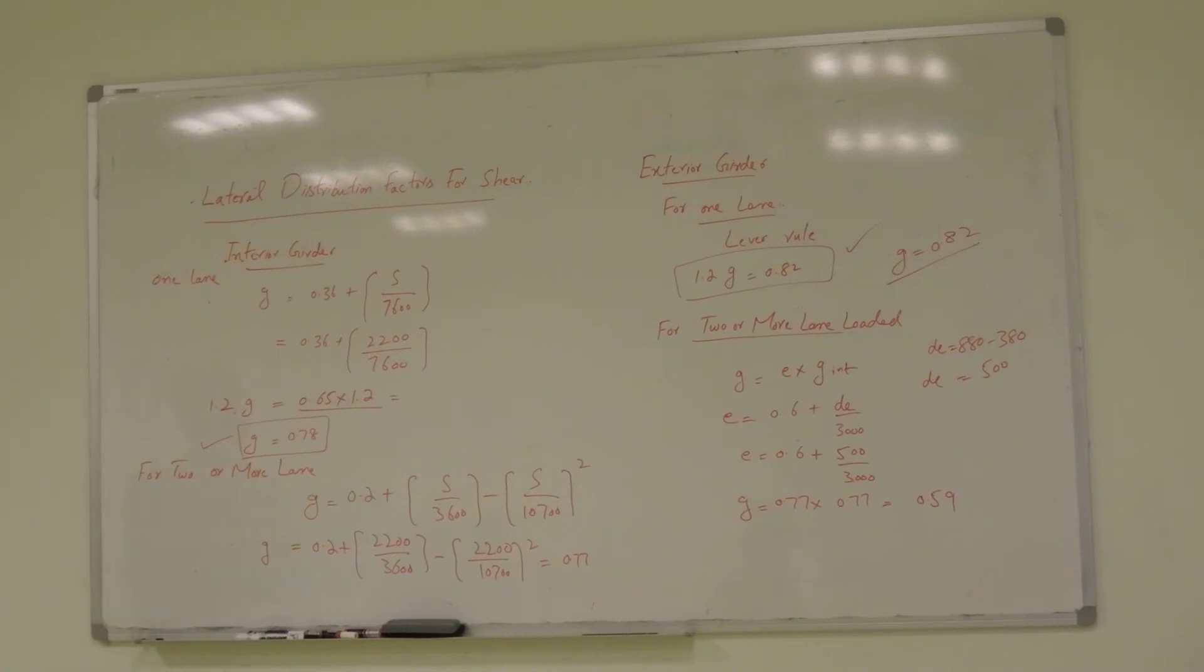78. So, it means one wheel here 78, another wheel there 78 and now we will calculate the bending moment along the length of the beam or shear force along the length of the beam. So, these G factors are for the shear. So, now we calculate the shear force along the length of the beam.